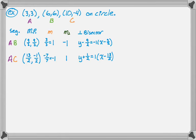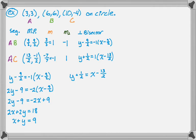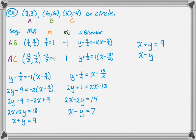Now I have 2 lines and I just need to find their intersection. I'll rearrange them. Starting with the perpendicular to AB, I multiply by 2 and distribute the negative 2 on the right-hand side, then move all variables to one side and constants to the other — adding 2x and 9 to both sides, then dividing by 2 — giving x plus y equals 9. For the second equation, I multiply by 2, move 2y to the other side and add 13, giving 2x minus 2y equals 14, then divide by 2: x minus y equals 7.